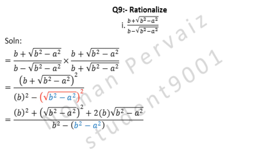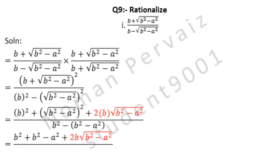Divided by B whole square is B squared, minus comes as it is. Here square and square root are cancelled, so only B squared minus A squared will be left. Is equal to: B whole square is B squared, plus, here square and square root are cancelled, so only B squared minus A squared will be left, plus 2 into B is 2B, then under root B squared minus A squared is written with it.